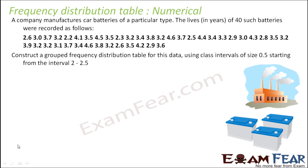Let's take one more example. This is a factory which manufactures car batteries, and these batteries have different lifespans. The life of 40 such batteries is recorded for observation, and the values are in years. We have to create a grouped frequency distribution for this data. The interval size is 0.5 and the starting value is 2 to 2.5. Subtracting 2.5 minus 2 gives 0.5 — so this is an overlapping class.